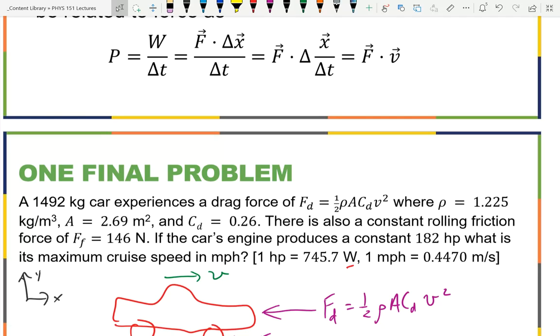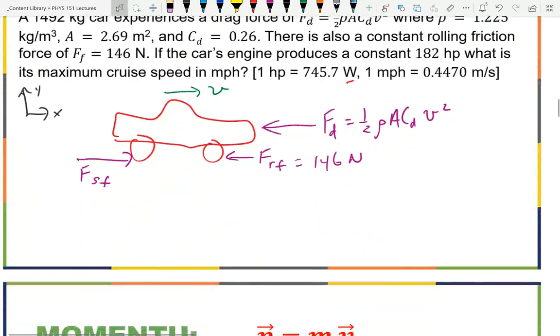The work done over time, which can also be written as force times the velocity parallel. Well in this case the force and velocity are parallel. So my force static friction is equal to the power divided by the speed. And we know the power, that's 182 horsepower. In theory, what is a horsepower? It's the power that a horse can put out. It's how much work per second a horse can do.